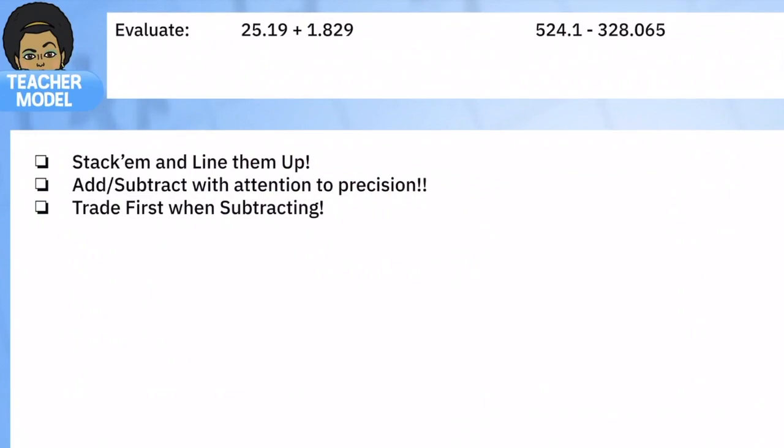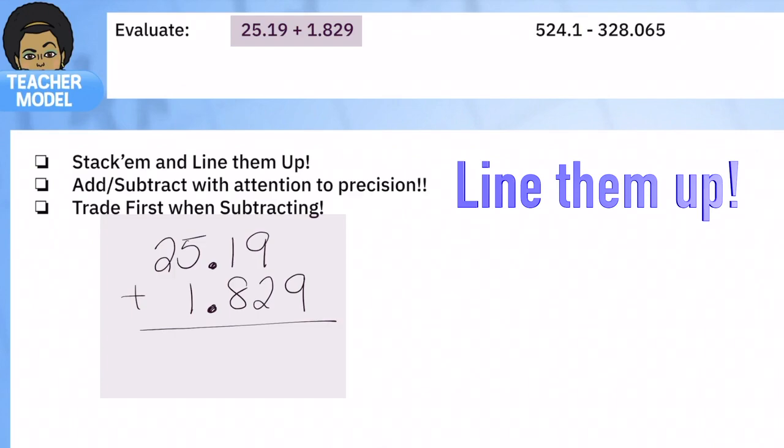Let's start with the addition problem. I'm just going to stack them, and while I stack them, the thing I want you to really notice is how I'm making sure that my decimals are lined up right on top of each other all the way until my sum. It should be lined up in a nice straight row.